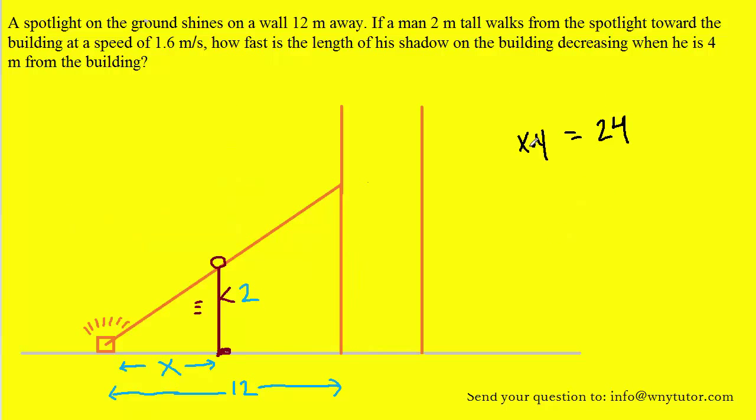In this case we are going to have to use the product rule because we have the product of X and Y. Here we have the product rule. We have the first function multiplied by the derivative of the second plus the second function multiplied by the derivative of the first. In our case the first function is X and the second function is Y. So let's apply the product rule. We have the first function X times the derivative of the second which will be dy/dt plus the second function times the derivative of the first which will be dx/dt. On the other side of the equation we have a constant whose derivative will equal zero.